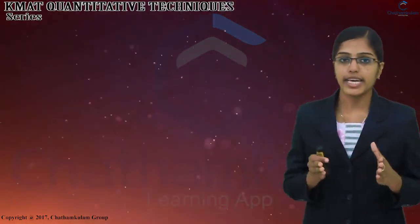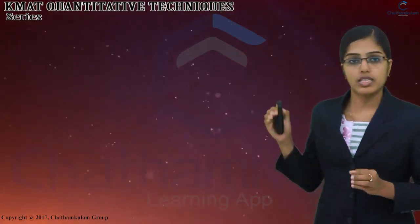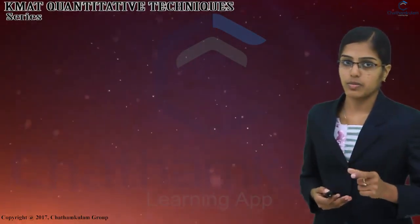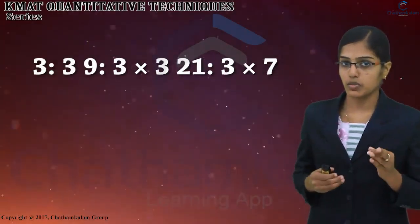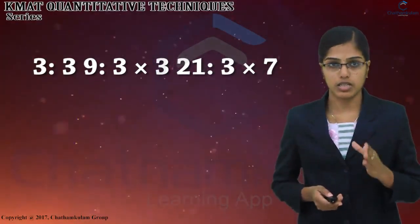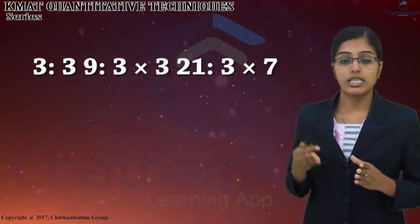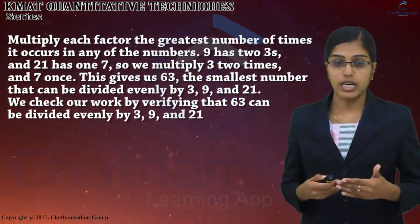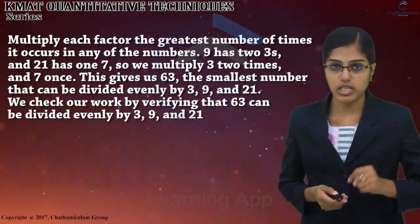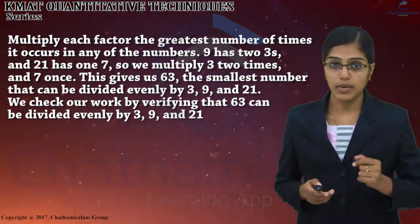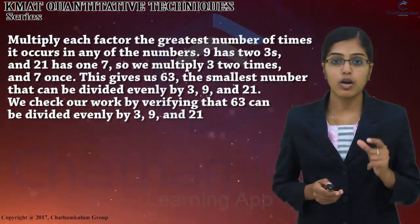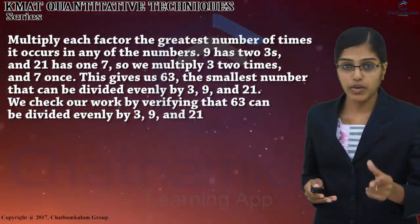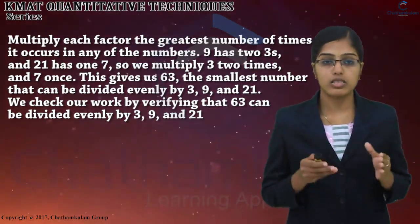Find the LCM of the set of numbers 3, 9, and 21. First, list the prime factors of each number: 3 has one prime factor, which is 3; 9 has factors 3 × 3; and 21 has factors 3 × 7. Multiplying each factor the greatest number of times it occurs: 9 has two 3's and 21 has one 7, so we multiply 3 twice and 7 once. This gives us 63 — the smallest number that can be divided evenly by 3, 9, and 21. We verify that 63 is divisible by 3, 9, and 21.